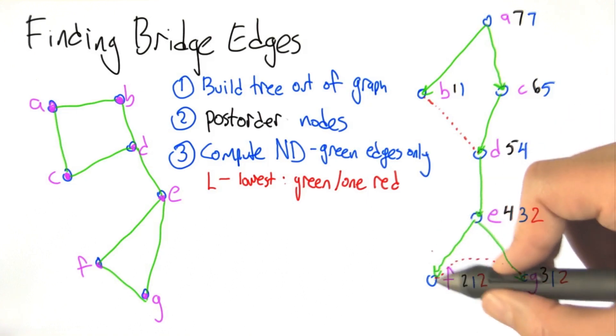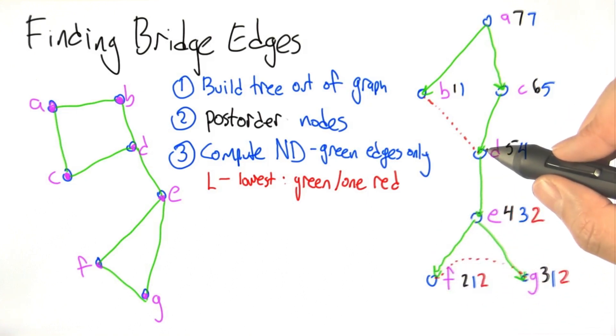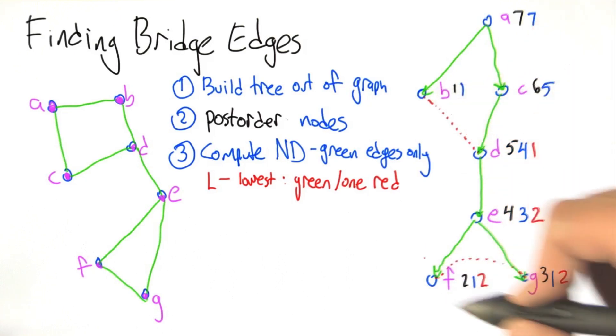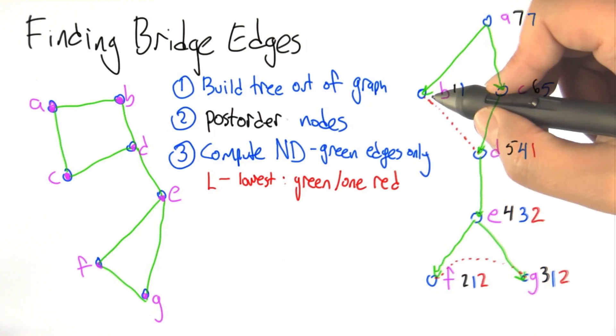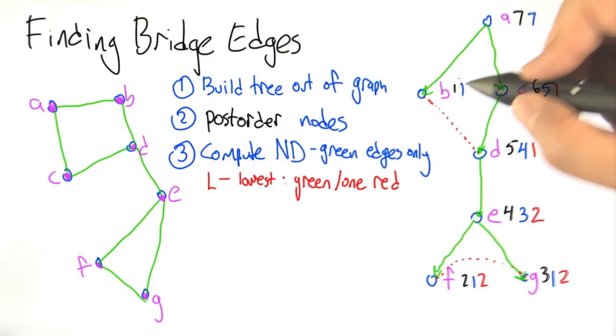D can reach all of these nodes and itself but also by a non-tree edge it can reach this node and the smallest of those numbers is 1. C can reach all of these nodes and through one of those nodes one tree edge gets it to 1. B values itself as 1 so that's going to be the smallest.